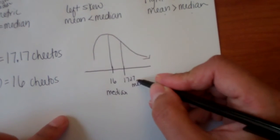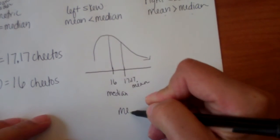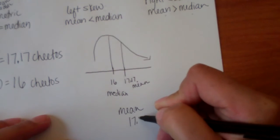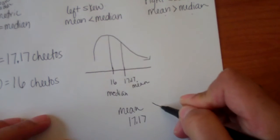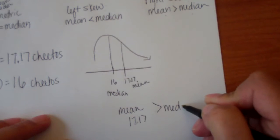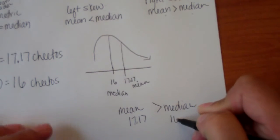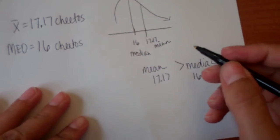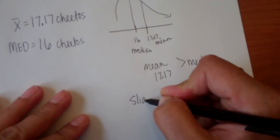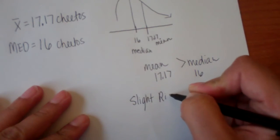So our mean, which is 17.17, is greater than our median of 16. Therefore, we have a slight right skew.